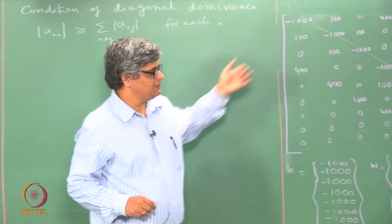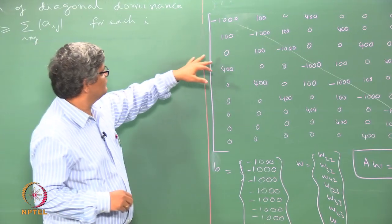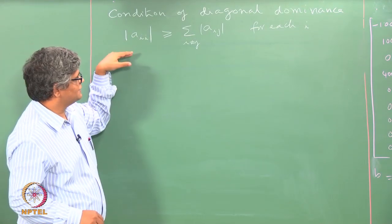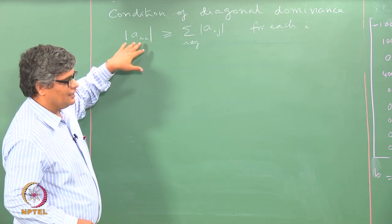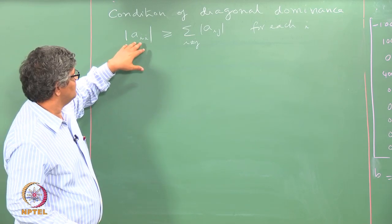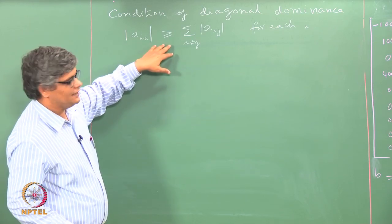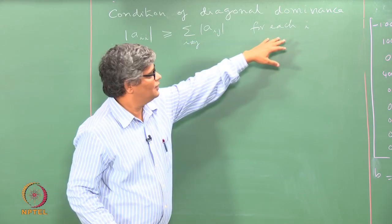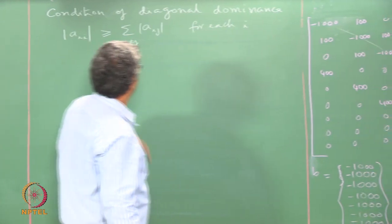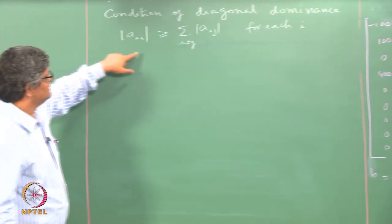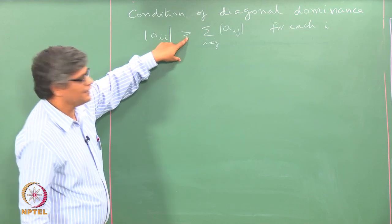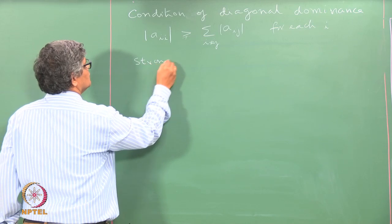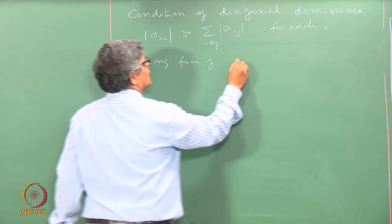In order to see how to proceed with the solution, we will look at the condition of diagonal dominance. The diagonal dominance can be expressed in the form where the absolute value of the diagonal is greater than or equal to the sum of all the off-diagonal elements in the same row. When this is satisfied with the strict greater-than symbol in all cases, that is known as the strong form of diagonal dominance.